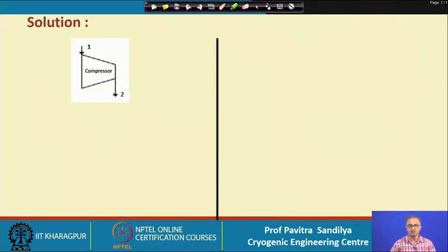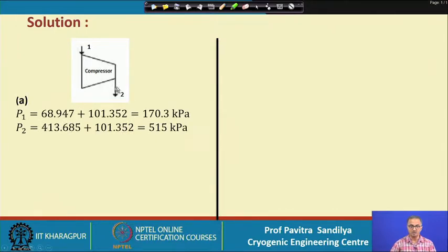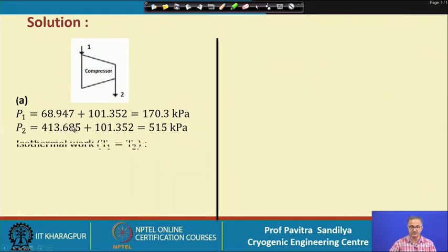This is a typical compressor where points 1 and 2 represent the inlet and outlet. P1 is the inlet gauge pressure — we add atmospheric pressure to get the absolute pressure. Similarly, P2 is the outlet gauge pressure plus atmospheric pressure to get the absolute value. With P1 and P2 known, and since it is isothermal compression, T1 equals T2.